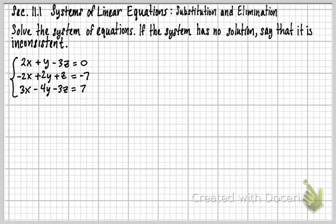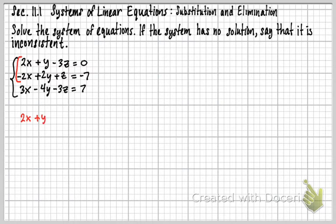Let's try solving this system now. We're going to use the elimination method three times — that's essentially what it comes down to for a system of three equations and three unknowns. I'm going to take the first two equations because the x's are already opposites, so I don't have to do any extra work. I'll add those together to get rid of the x's. So I just took the first equation: 2x + y - 3z = 0, and wrote it down.